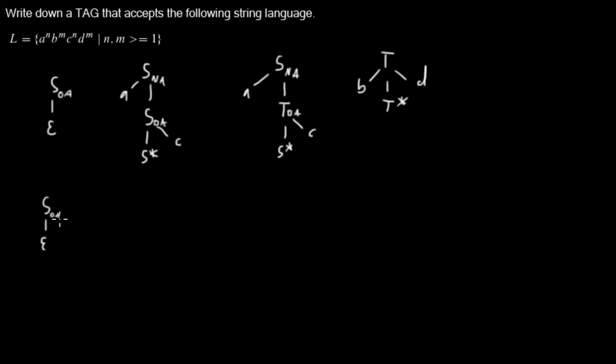I don't need to write down OA, but it helps in the derivation process to keep track of the node. Now I will adjoin this tree into that node.